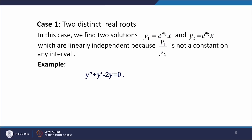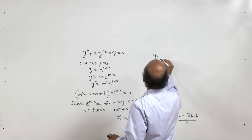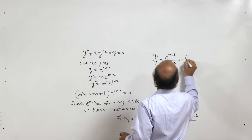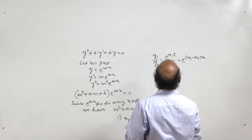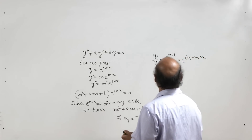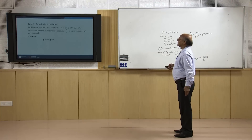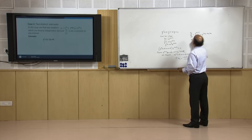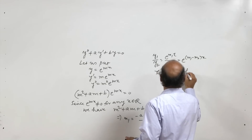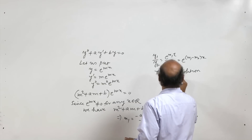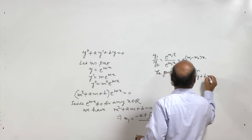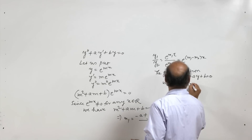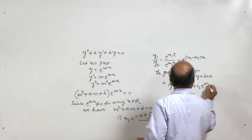Now y₁ and y₂ are linearly independent because y₁/y₂ = e^((m₁−m₂)x). Since m₁ ≠ m₂, this is not a constant, and therefore y₁ and y₂ are linearly independent. So the general solution of the equation in this case is y = c₁·e^(m₁x) + c₂·e^(m₂x).